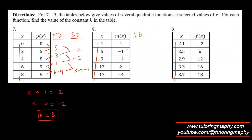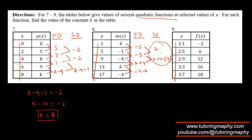For the second k-for-quadratic problem: first differences are −1 minus 4 = −5, −4 minus −1 = −3, k minus −4 = k + 4. Second differences: −3 minus −5 = 2, and (k + 4) minus −3 = k + 7. Setting k + 7 = 2 gives k = −5.